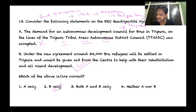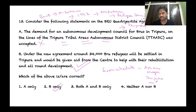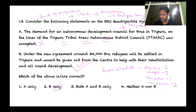The second statement — that under the new agreement around 34,000 Bru refugees will be settled in Tripura and given aid from the Centre for rehabilitation and all-round development — is correct. The answer is B only. Under the 6th Schedule, autonomous district councils are created and are applicable in Assam, Meghalaya, Tripura, and Mizoram.